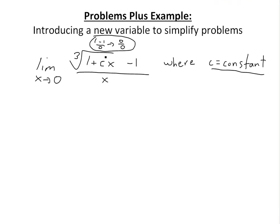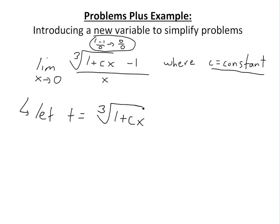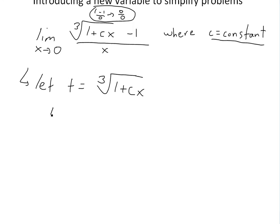I just wanted to show this concept right here, because this looks pretty complicated, but you could actually simplify this pretty easily by introducing a new variable. In this case, we will let t equal the cubed root of (1 + cx). The idea is we can simplify the whole equation and get rid of this root. If we cube both sides, we get t cubed equals 1 + cx.